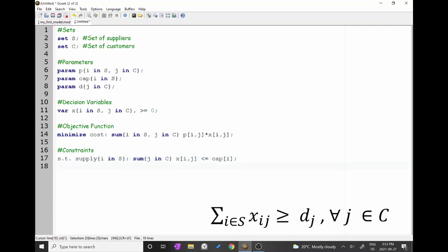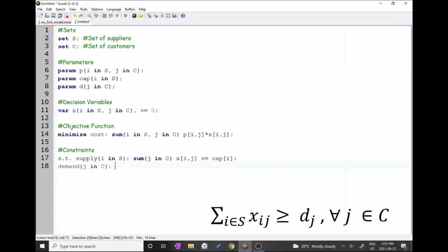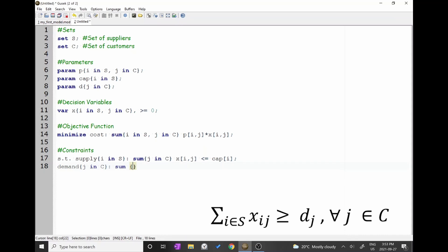The following constraint is the demand. Type the name of the constraint, which I will call demand. Remember that this constraint was for every j in c. So type keys j in c and add a colon. Write sum keys i in s, followed by x brackets i j greater than or equal d brackets j semicolon.